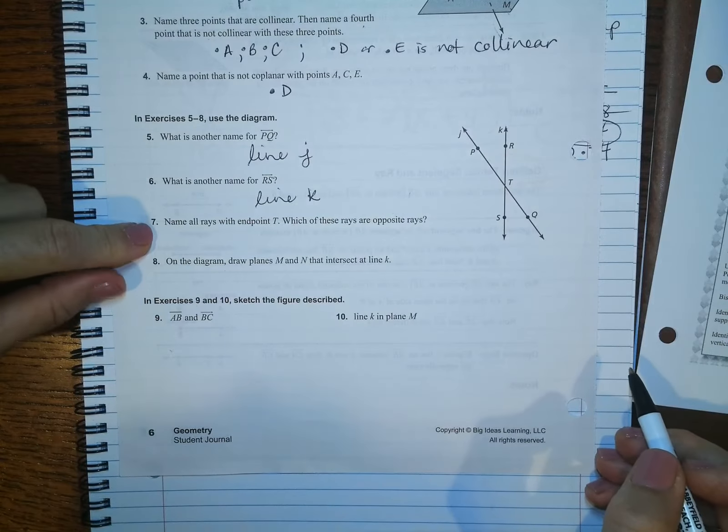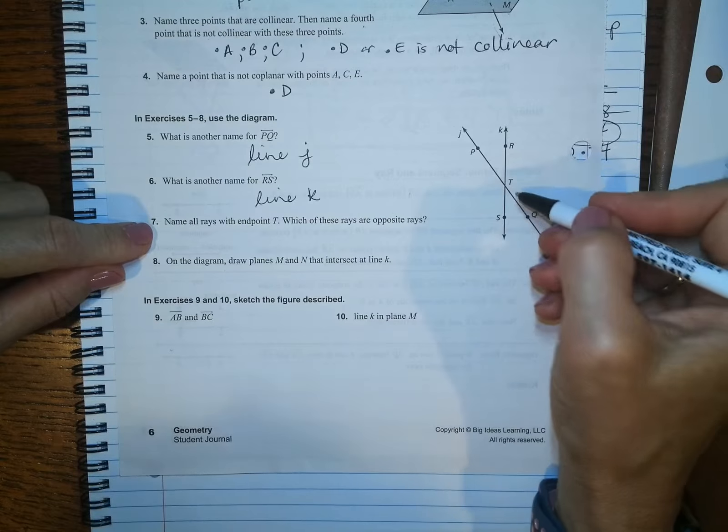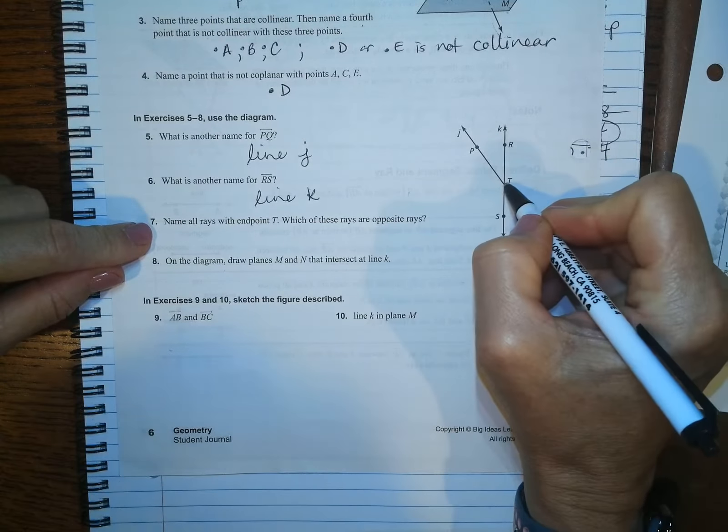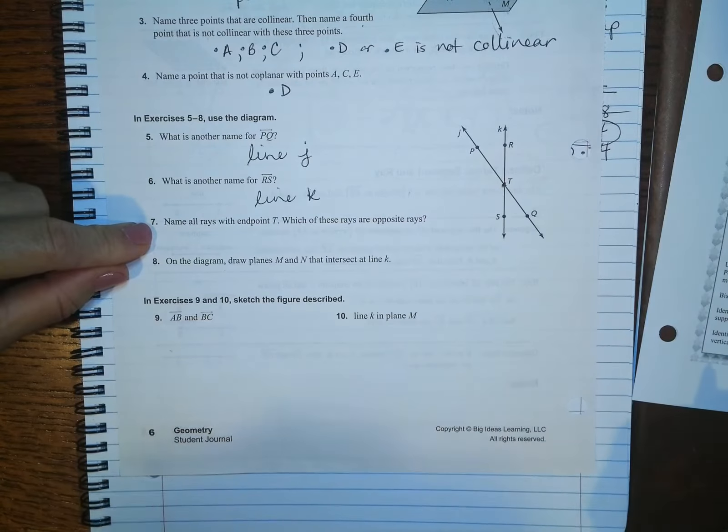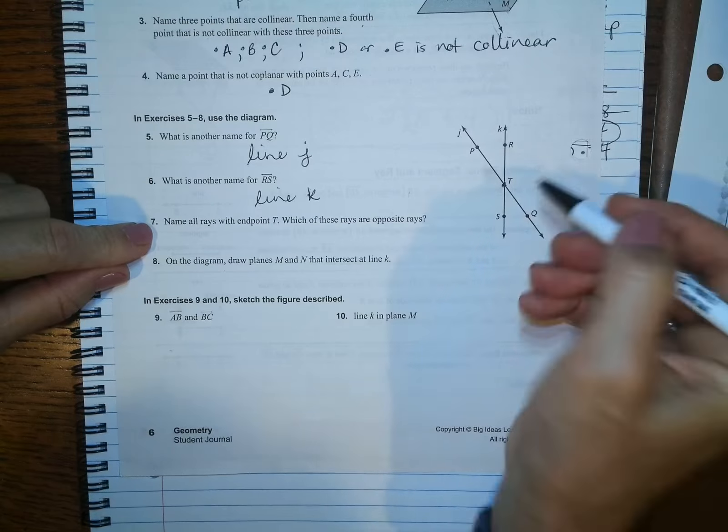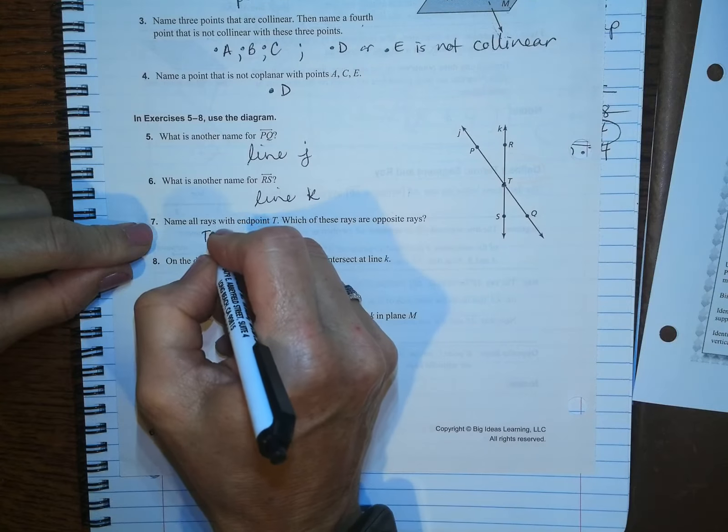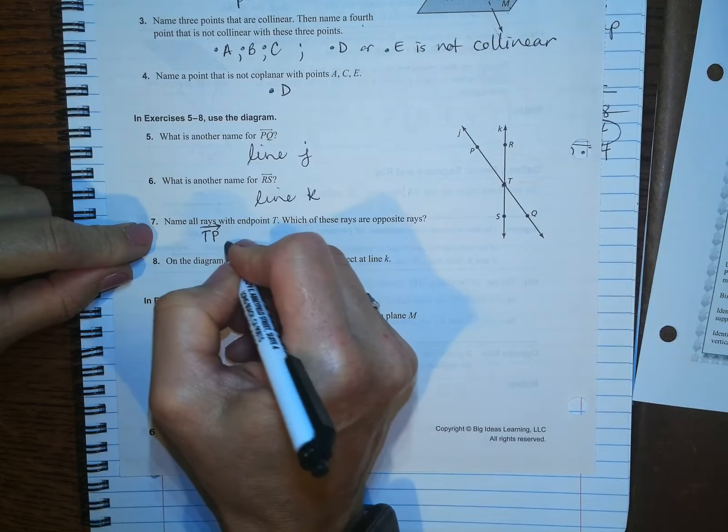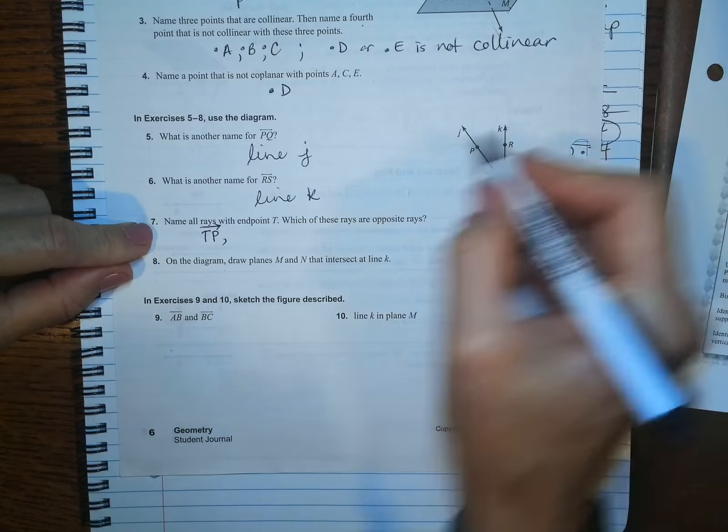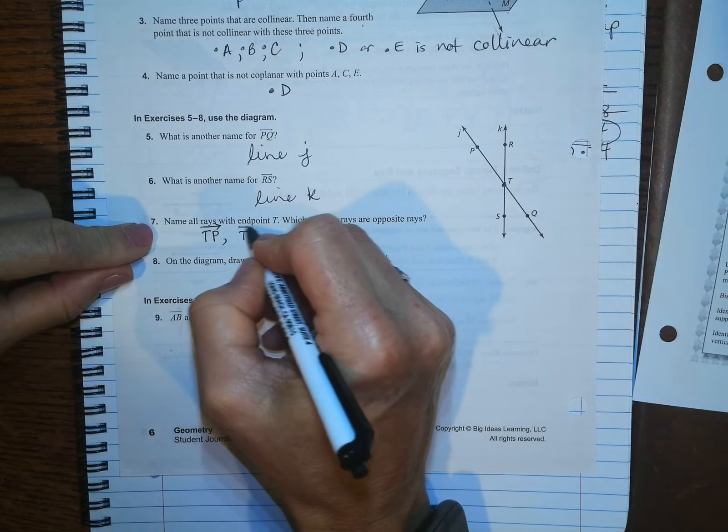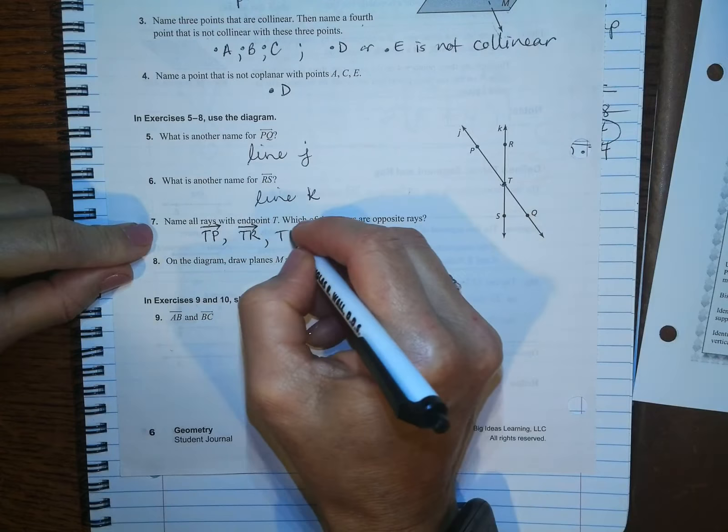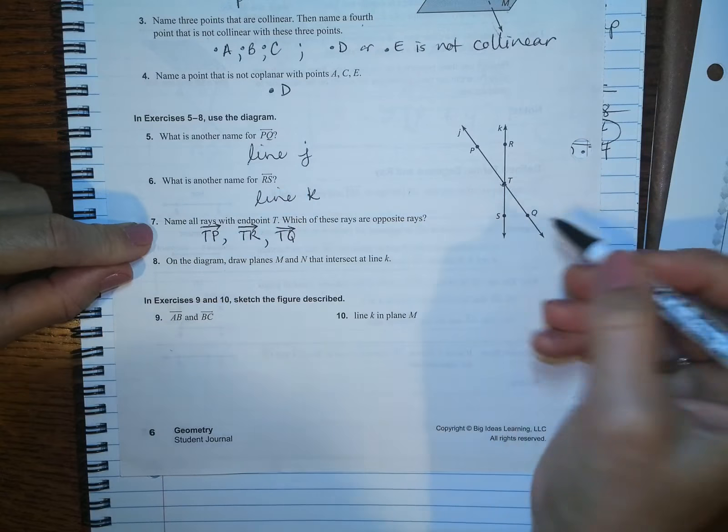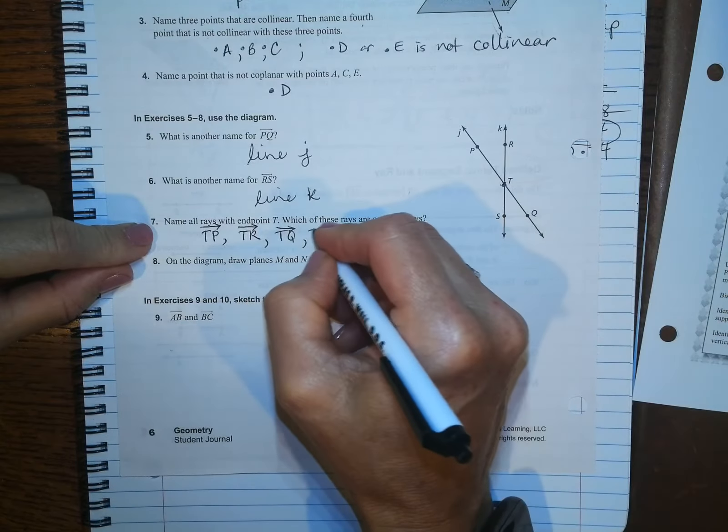Name all rays with endpoint T. Okay. Here's T. This is a point. Even though it's not a little black dot there, it's always a point. And then the rays are going to be from here to here. That's T, P with the arrow over the P. T, R, arrow over the R. T, Q, arrow over the Q. And T, S, arrow.